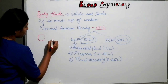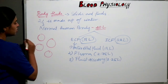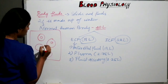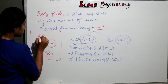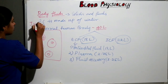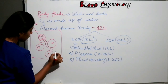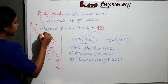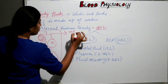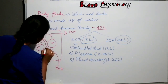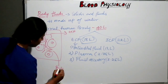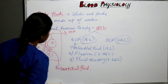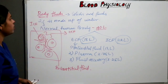So the fluid which is present inside the cell is called ICF. The fluid present outside the cell is called ECF. The fluid present in between the spaces of the cell is called interstitial fluid. That's all about the body fluids.